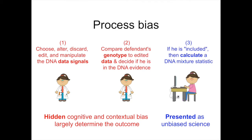There is a process bias in much mixture interpretation done by people. First, an analyst can subjectively choose, alter, discard, edit, or manipulate the DNA signals — this is routine in current interpretation. Second, having manipulated the data, they compare a defendant's genotype to this edited data and decide if the defendant is in the DNA evidence. Only if the person is included in the manipulated data will they even calculate a statistic. The hidden cognitive and contextual biases largely determine the outcome, yet are hidden from the judge, the jury, and any description in the report.